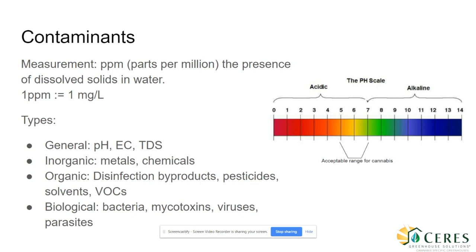And last, microbiologicals. They're not only dangerous for human consumption — they can have disastrous effects on plants in the form of disease such as root rot. Groundwater and surface water sources often contain a range of biological contaminants like bacteria and viruses.